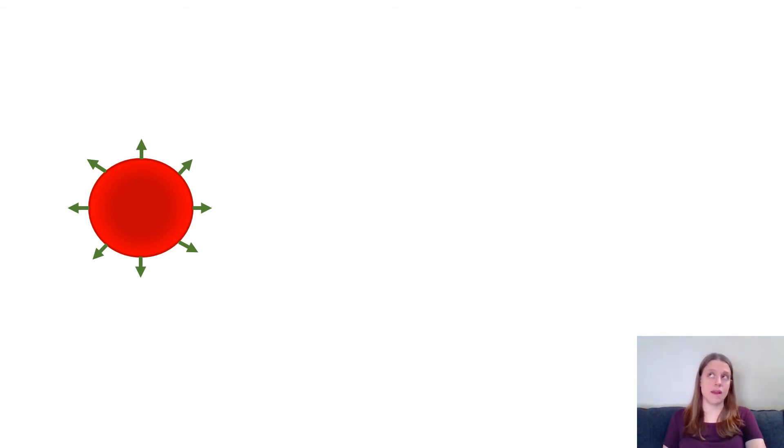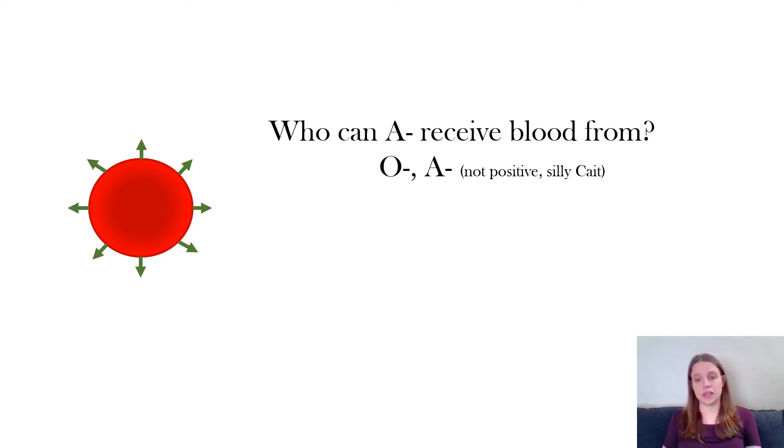So if I have A negative blood who can I receive blood from? What types of blood aren't going to cause a reaction? So I can receive blood from O negative and A negative because those don't have any antigens that my immune system will react against. I only have A antigens so I can't receive anything with B or anything with RH because my immune system will recognize that as being foreign and attack it.